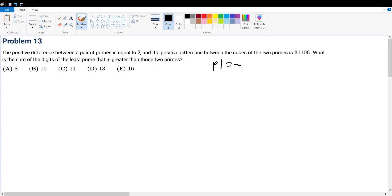Let's assume that the first prime, prime 1, is equal to x, and prime 2 is equal to y. In that case, x minus y is equal to 2, and x cubed minus y cubed must give 31106.